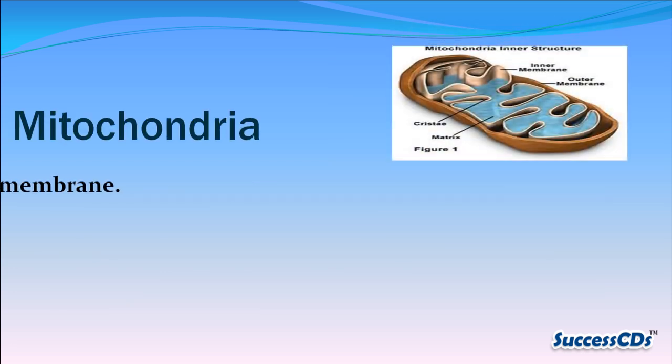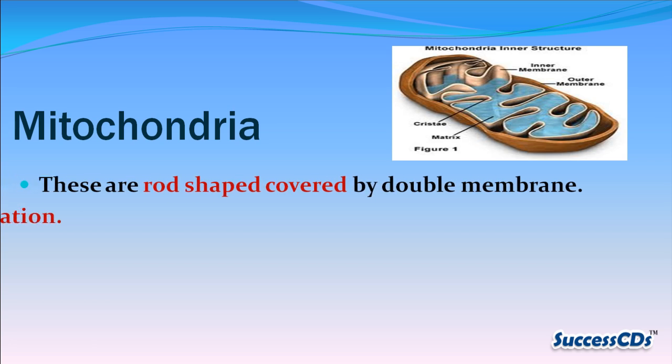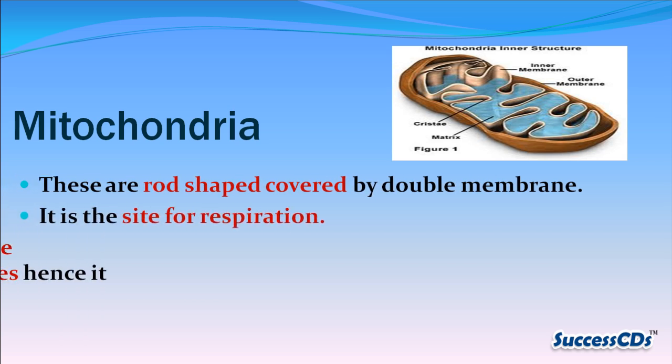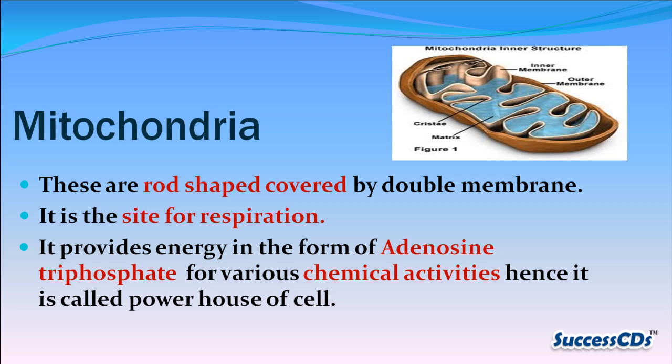Mitochondria are rod-shaped and covered by a double membrane. They are the site for respiration and provide energy in the form of adenosine triphosphate (ATP) for various chemical activities. Hence, mitochondria are called the powerhouse of the cell.